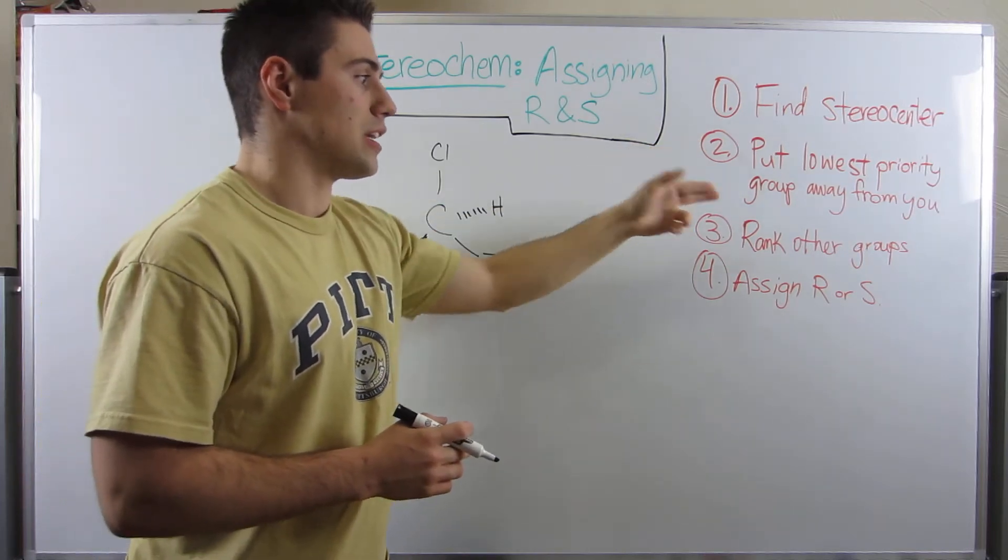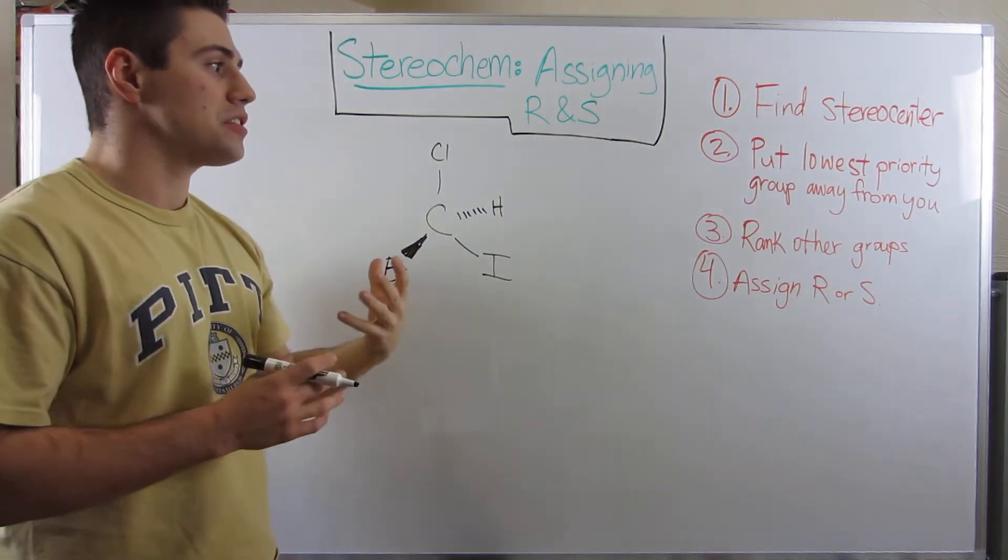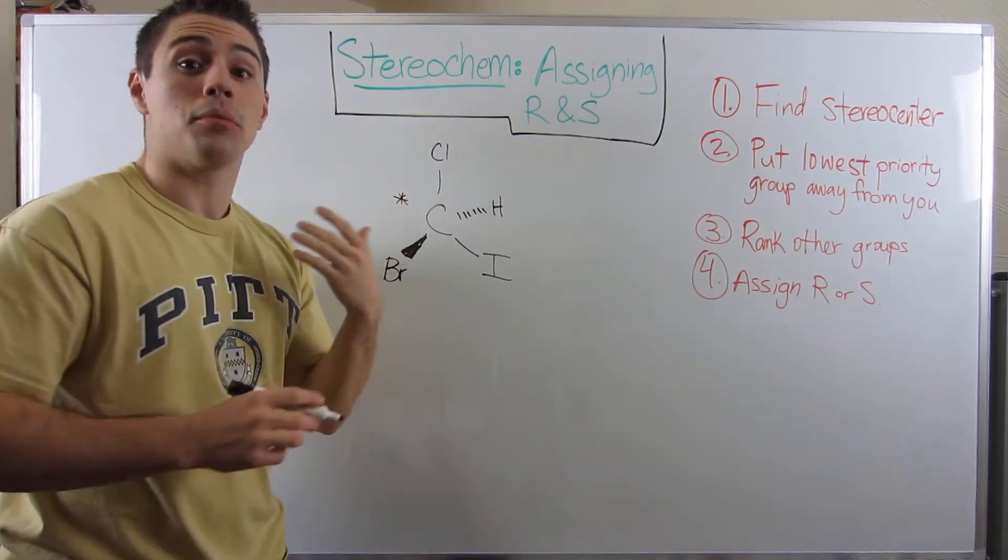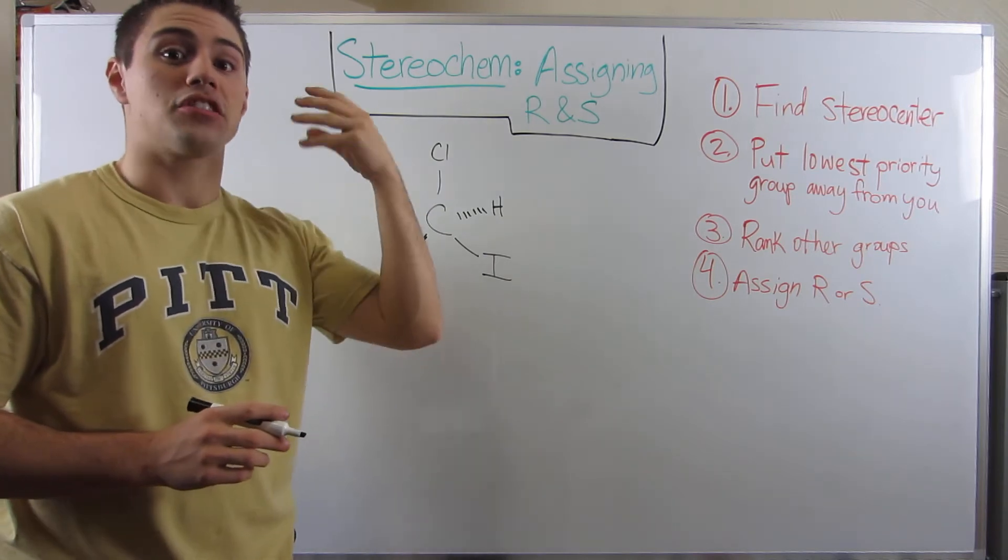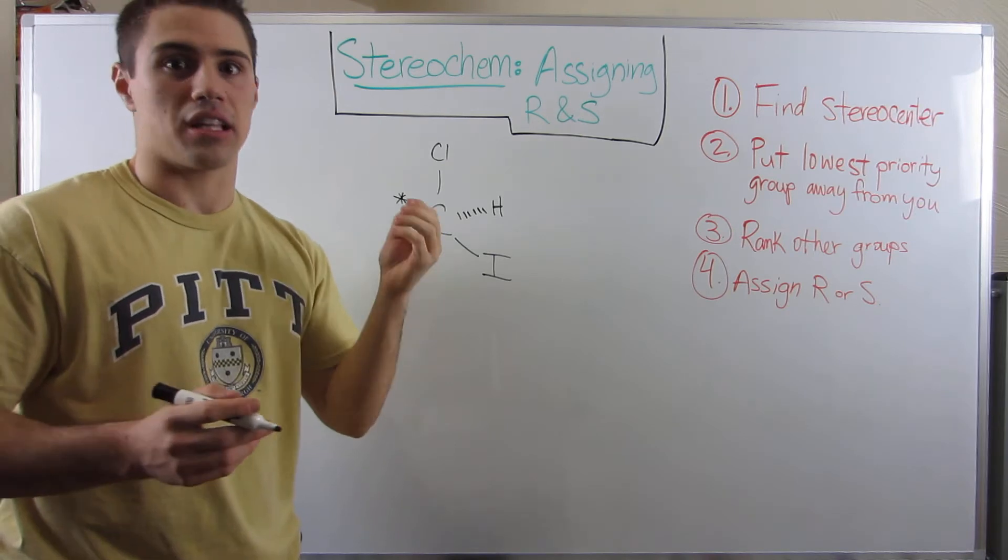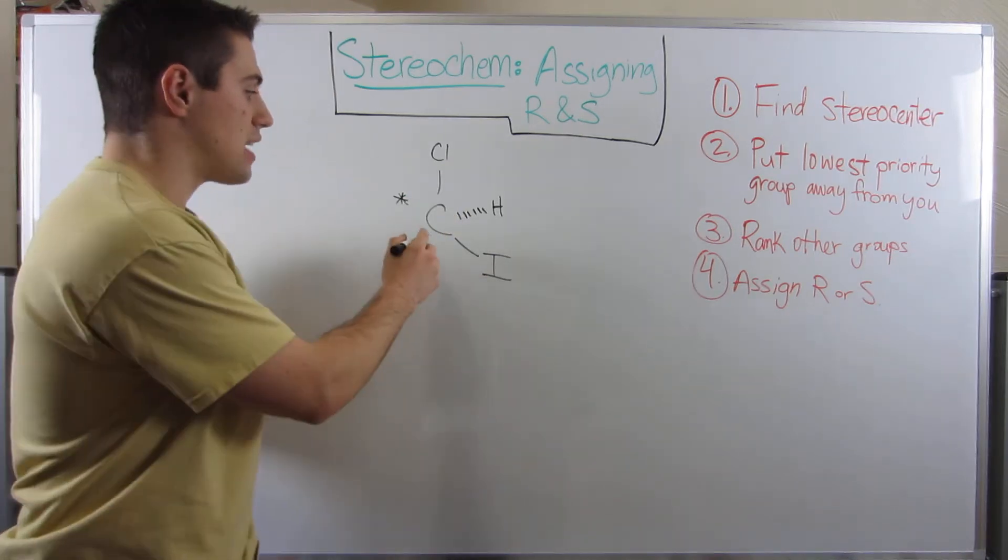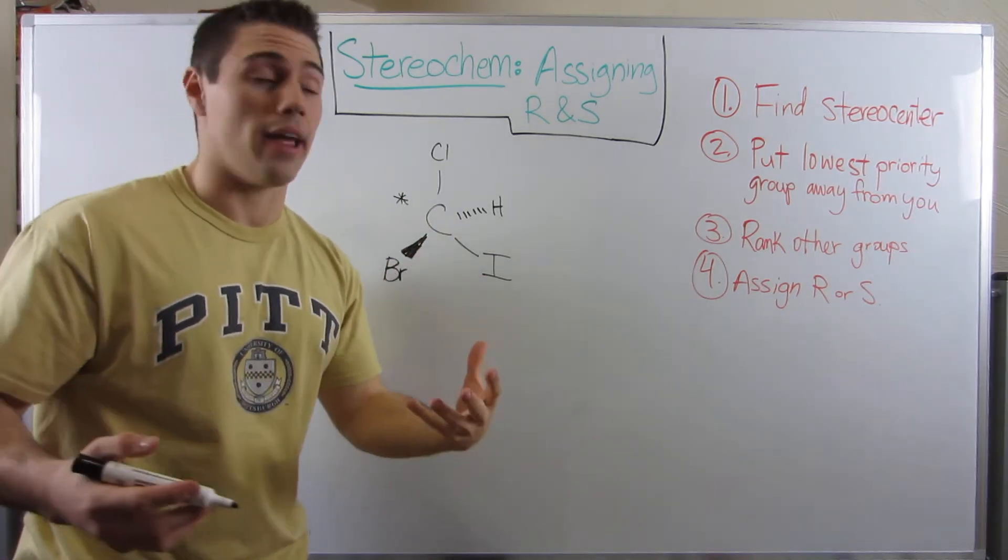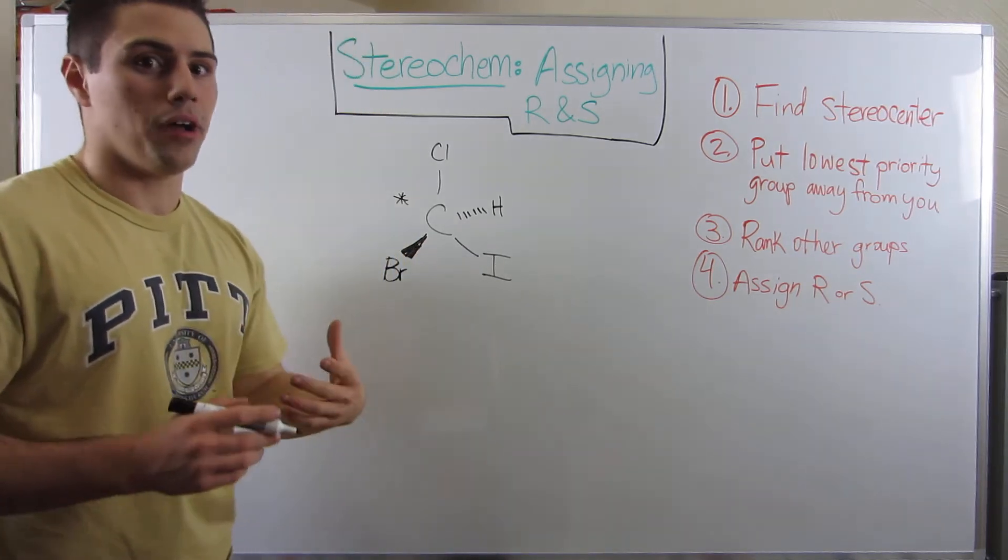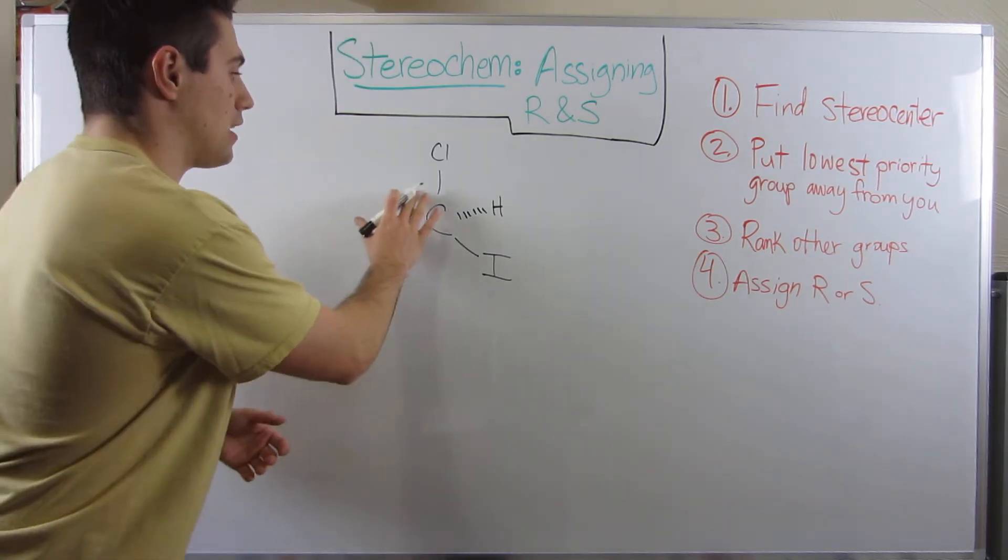Three, you have to rank your other groups. So basically we're going to assign priority to the groups attached to stereocenters due to molecular weight. So the heaviest molecules or atoms get the highest numbers and the lighter ones get the lower numbers. So you rank the groups attached to your stereocenters by how much they weigh. And then once you've done that, you assign R or S. But let me just show you with this example right here.